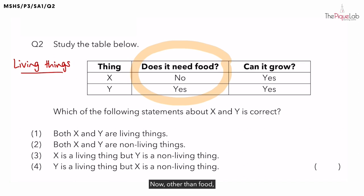Now, other than food, what else do living things need to survive? We also need to drink water, correct? So, water is important as well. Other than that, we need to breathe, which means that we are taking in air. So, food, water, and air are three important things for us to survive.